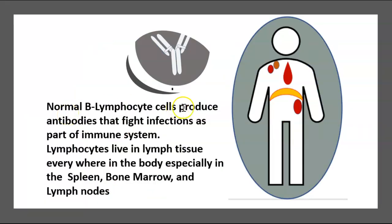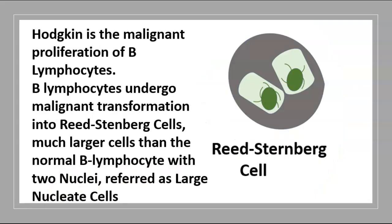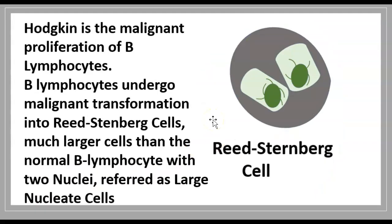Normal B lymphocyte cells produce antibodies that fight infections as part of the immune system — they move through the bloodstream. T lymphocytes, on the other hand, live in lymph tissue everywhere in the body, but you'll mainly find them in the spleen, the bone marrow, and the lymph nodes. Now that we've covered how B and T lymphocytes function normally, we can see how Hodgkin's Lymphoma will affect them.